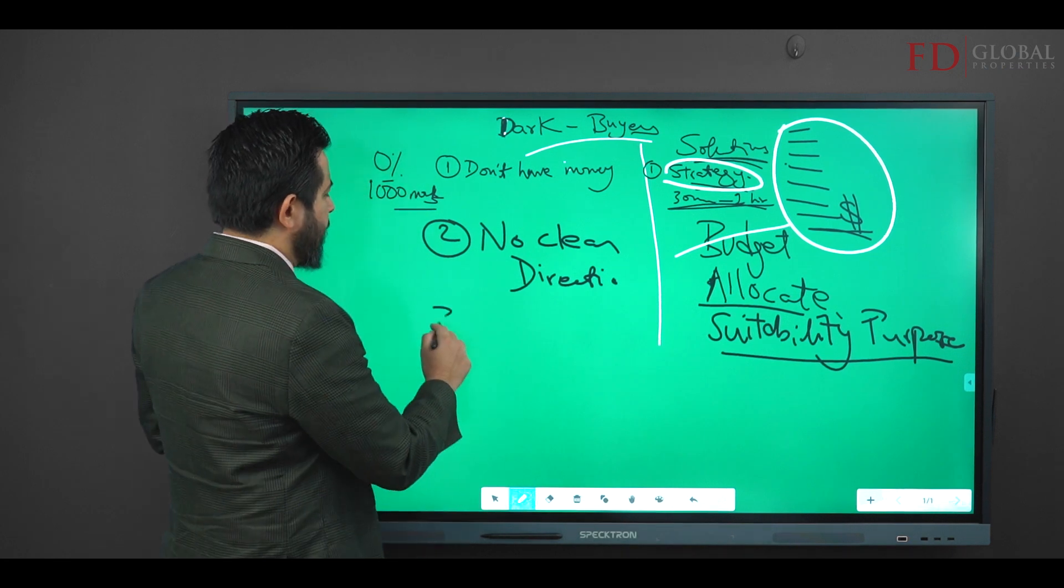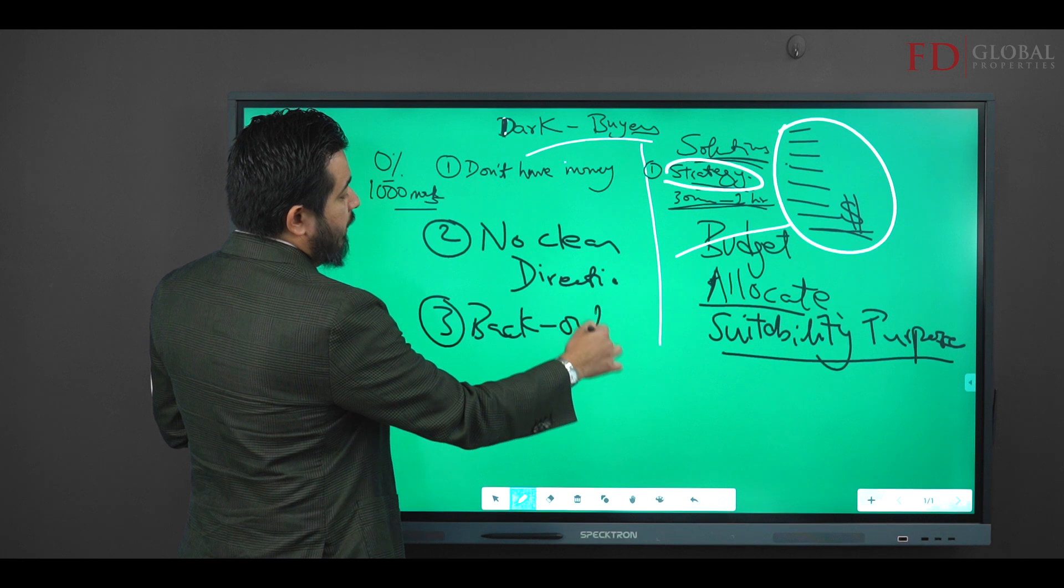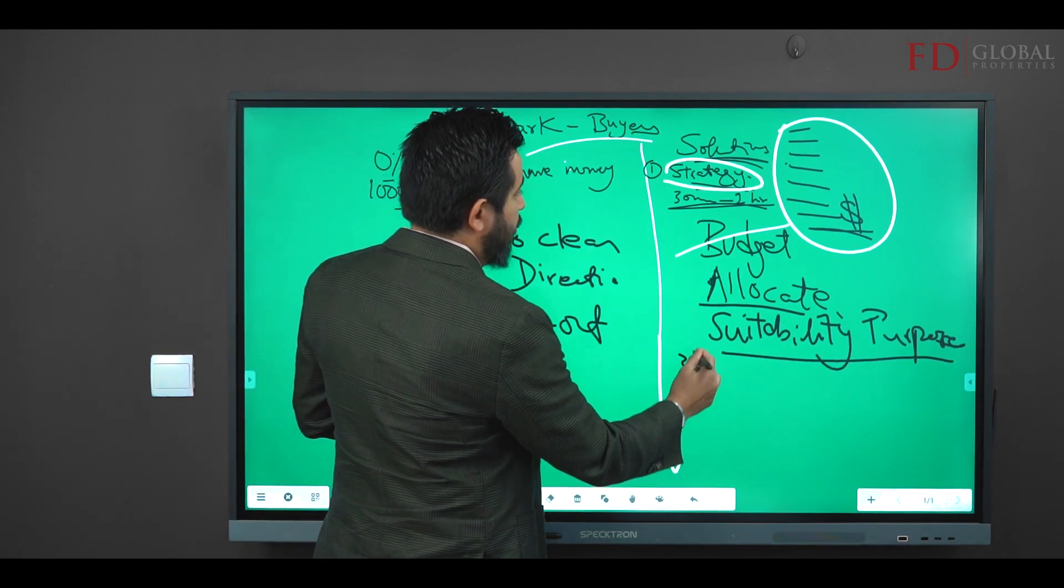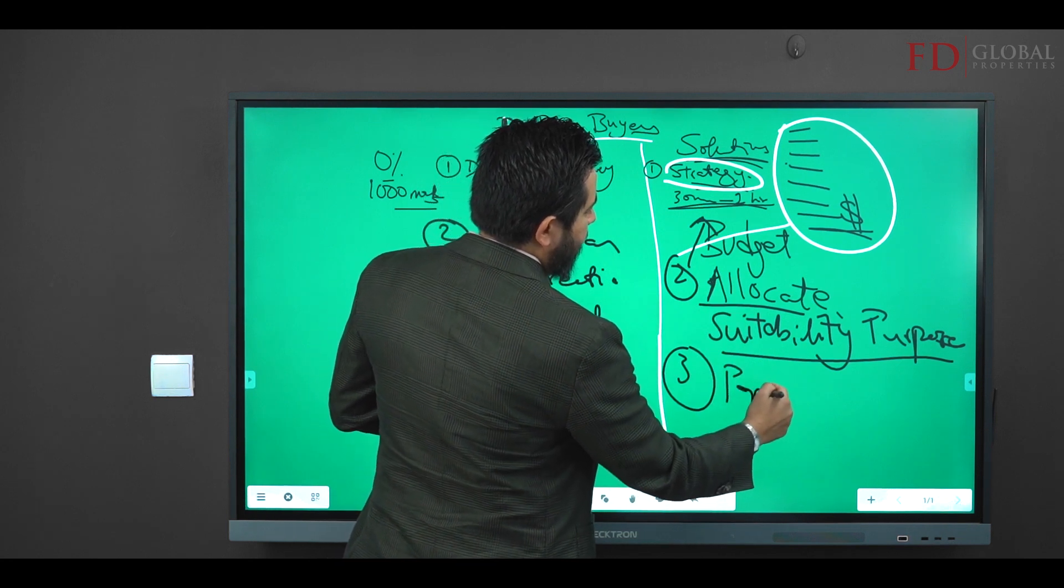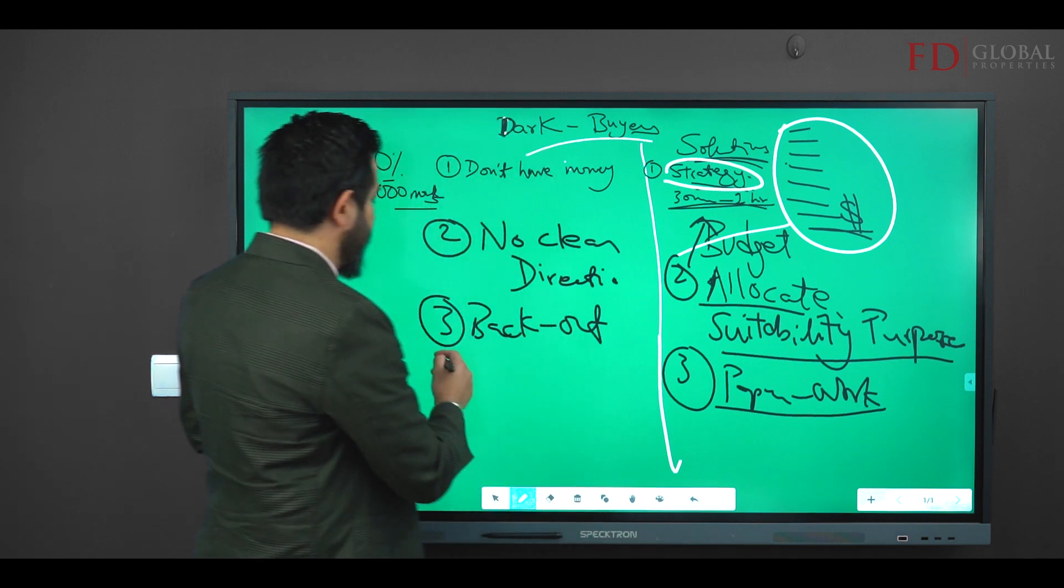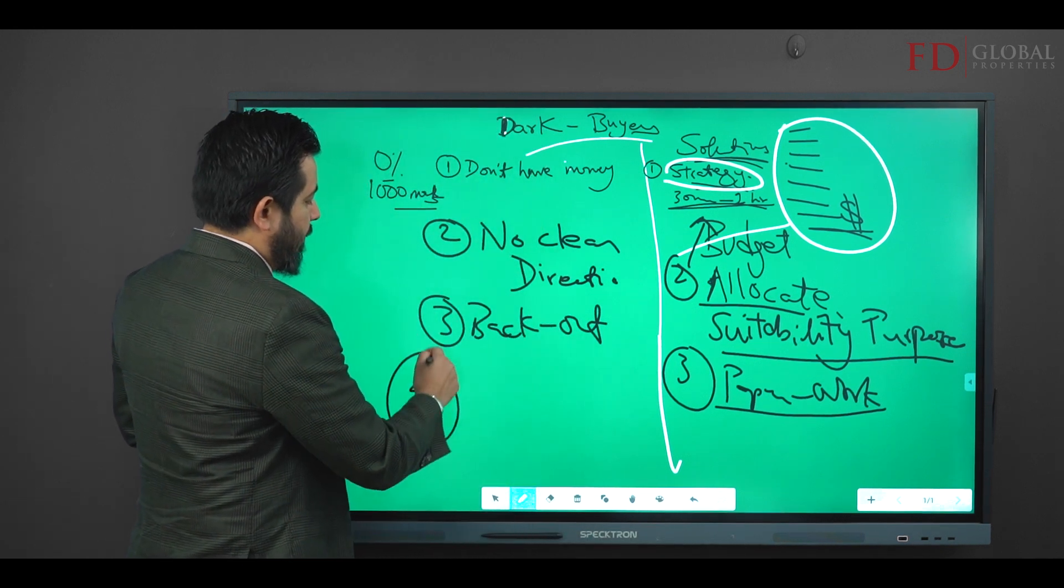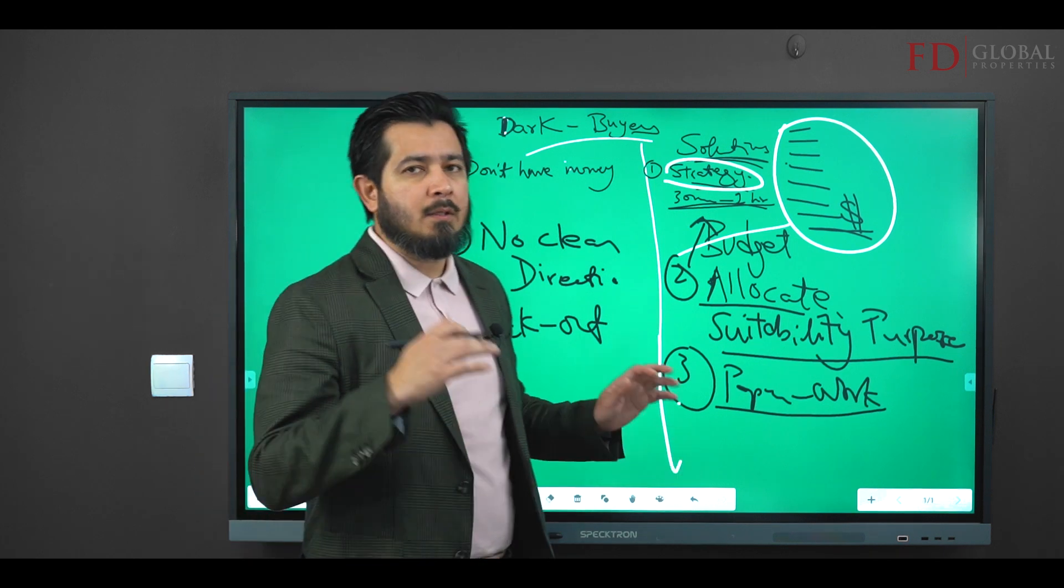Number three, they sometimes commit and back out of deals. This happens less, and the way you actually prevent it is you do your paperwork. So point two was also here. Do your paperwork properly and then you will find that no buyer ever backs out from you. I don't have this problem at all.